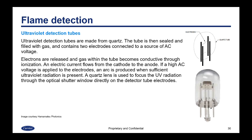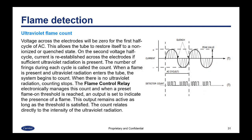A quartz lens is used to focus UV radiation through the optical shutter window directly on the detector tube electrodes. Voltage across the electrodes will be zero for the first half cycle of AC, allowing the tube to restore itself to a non-ionized or quenched state. On the second voltage half cycle, current is re-established if sufficient ultraviolet radiation is present. The number of firings during each cycle is called the count. When a flame is present and ultraviolet radiation enters the tube, the system begins to count; when there is no UV radiation, counting stops. The flame control relay electronically manages the count and when a preset flame-on threshold is reached, an output is set to indicate the presence of a flame. The count relates directly to the intensity of the ultraviolet radiation.